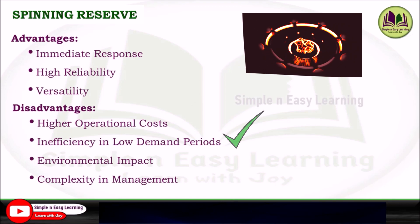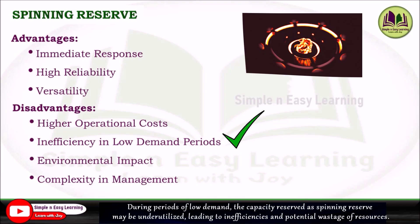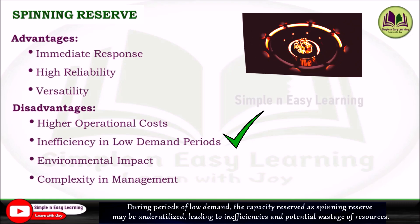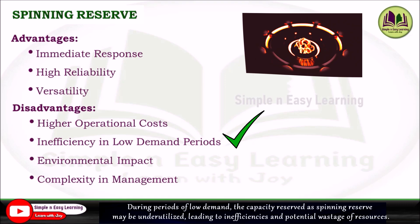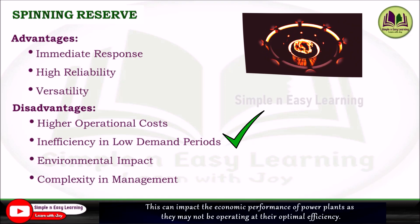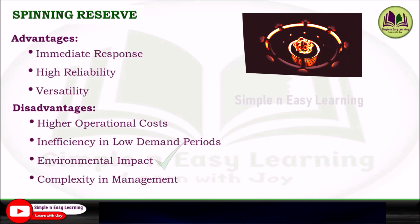The second disadvantage is inefficiency in low demand periods. During periods of low demand, the capacity reserved as spinning reserve may be underutilized, leading to inefficiencies and potential wastage of resources. This can impact the economic performance of power plants as they may not be operating at optimal efficiency.